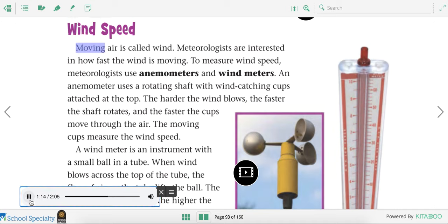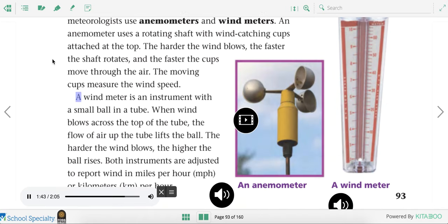Moving air is called wind. Meteorologists are interested in how fast the wind is moving. To measure wind speed, meteorologists use anemometers and wind meters. An anemometer uses a rotating shaft with wind catching cups attached at the top. The harder the wind blows, the faster the shaft rotates and the faster the cups move through the air. The moving cups measure the wind speed. A wind meter is an instrument with a small ball in a tube. When wind blows across the top of the tube, the flow of air up the tube lifts the ball. The harder the wind blows, the higher the ball rises.